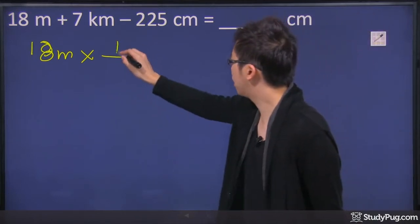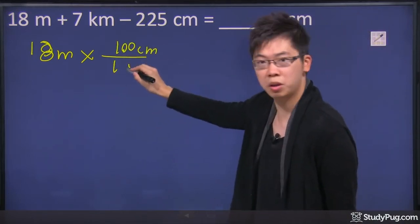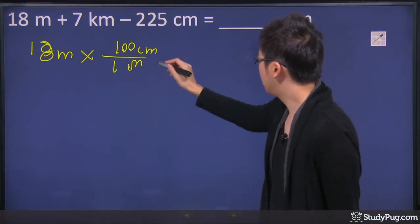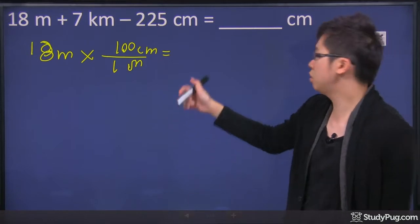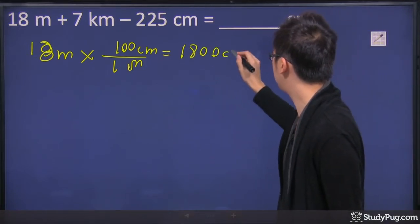there are 100 centimeters for every meter. You remember that. Then all you have to do is just make that equal sign right there. 18 times 100 gives you 1,800 centimeters.